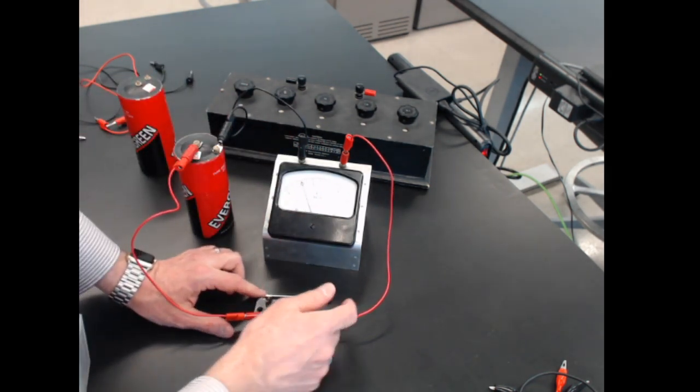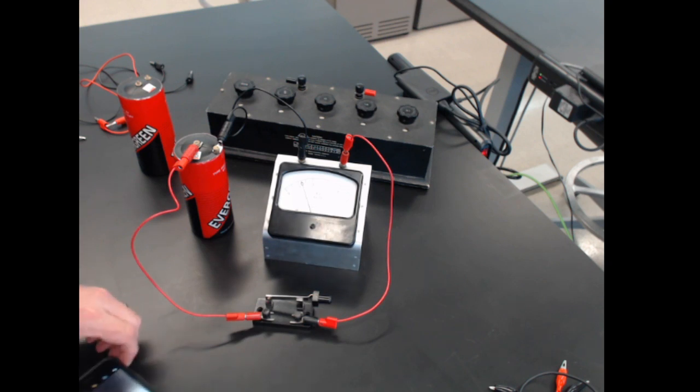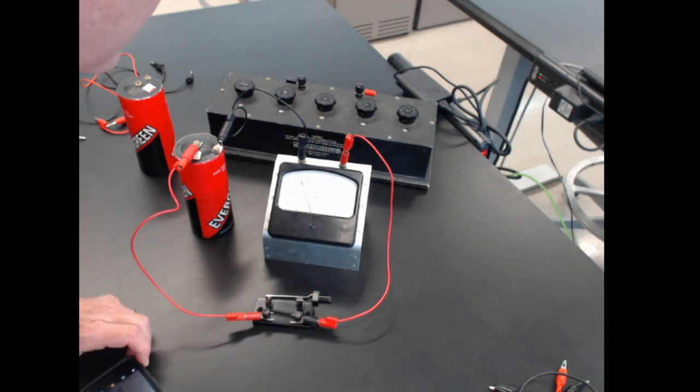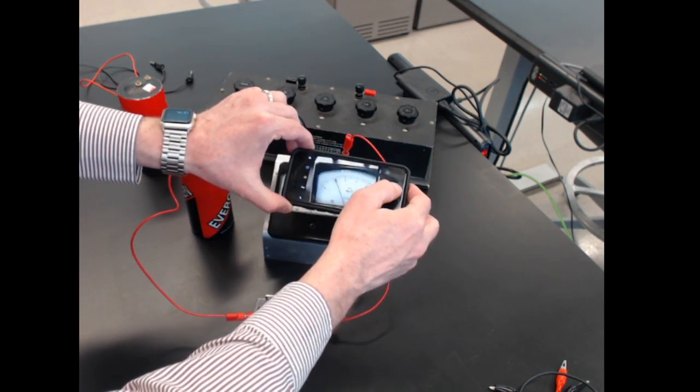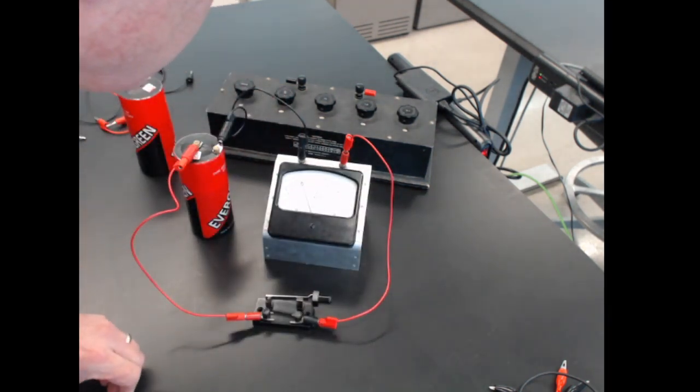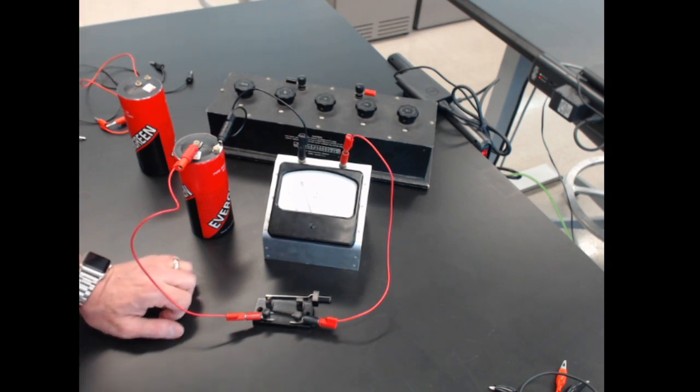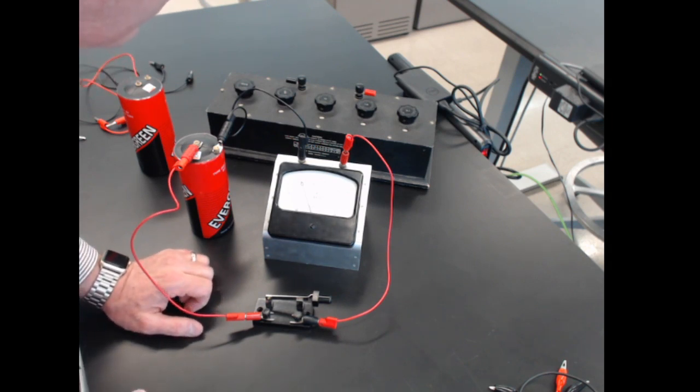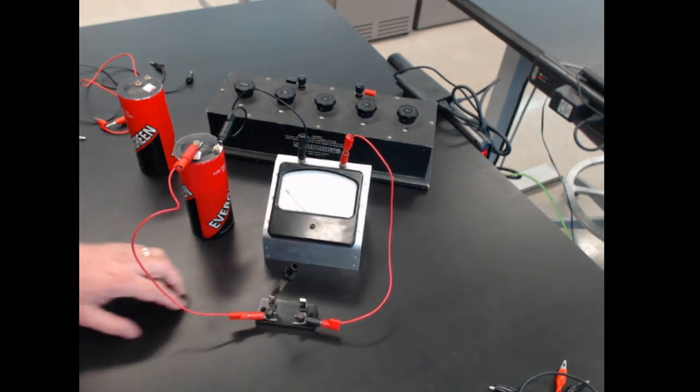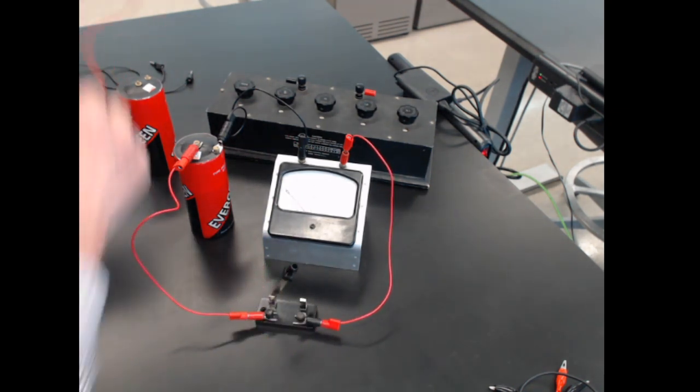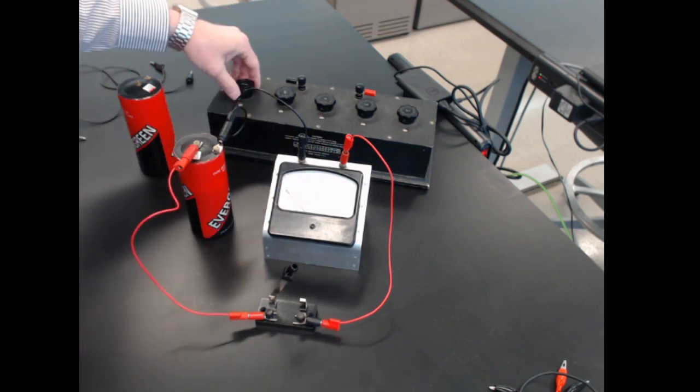By closing the switch, V naught appears to be 1.22, maybe 1.21. In fact, I think I see it dropping, so you might say 1.20 now. That's why I'm going to open the switch. Then we'll connect again the box, the decade box in parallel.